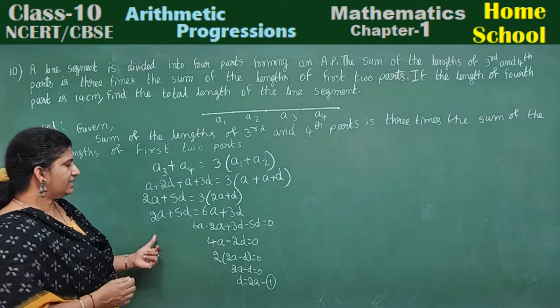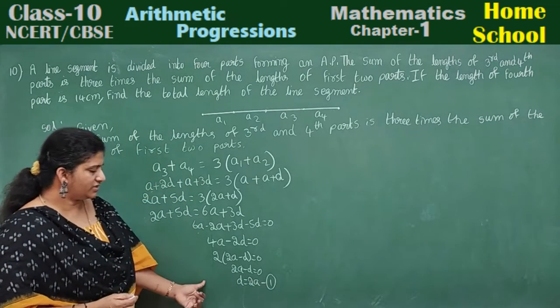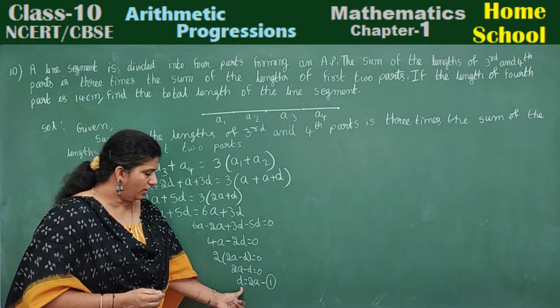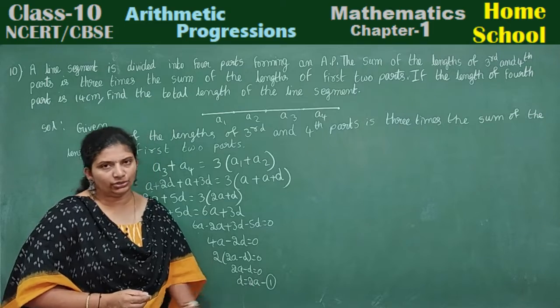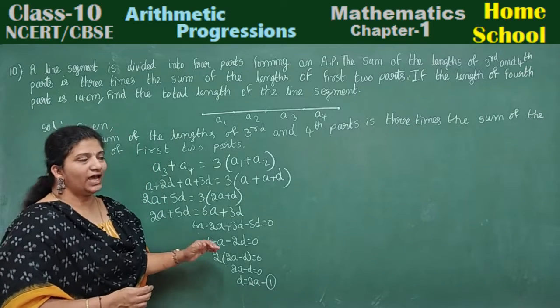Sending d to the other side: 2a minus d equals zero, so d is equal to 2a. Mark this as the first equation.